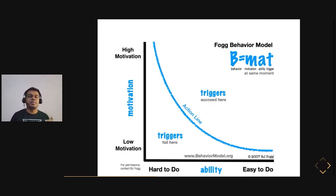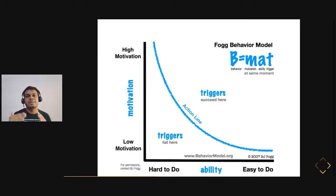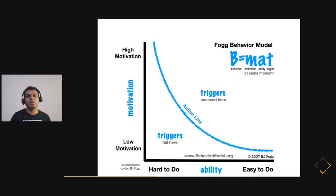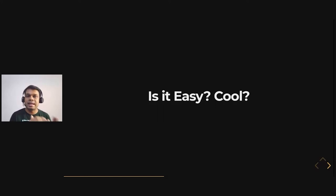The real question is motivation — is it something you'd want to do for a long time without external motivators? Most content falls below the action line in the Fogg model, where triggers fail. A successful, effective learning content should be above that line — both motivating and at an ability level the person can handle. In simple terms, I put it as two questions: is it easy, and is it cool?